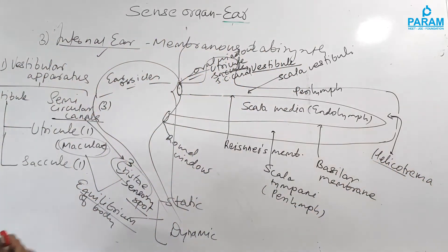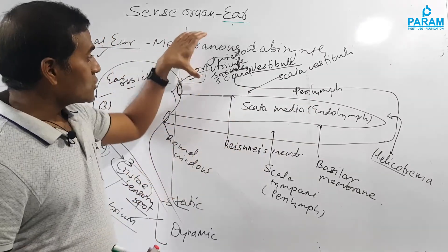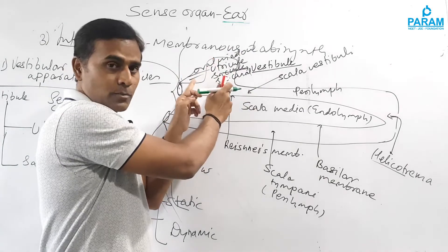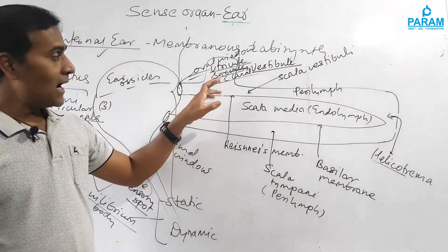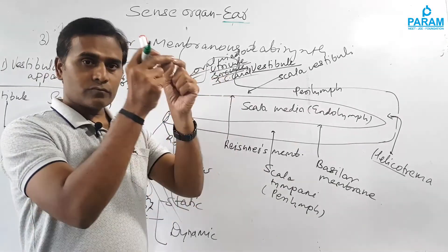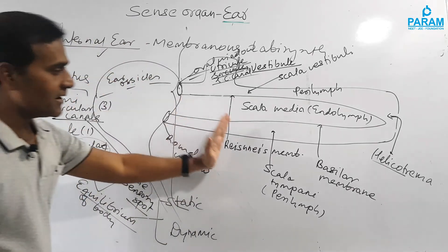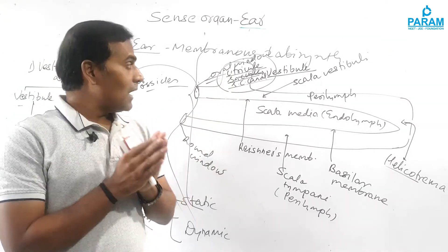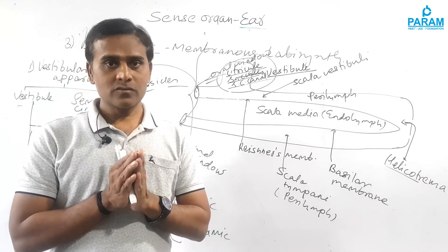This is about the structure of the internal ear. The vestibular apparatus is slightly above the level of the cochlea. In the next video, we will draw the structure of the vestibule, see how the macula and cristae look, and explain how the mechanism of hearing takes place. We hope that up to this point you have understood the structure of the external ear, middle ear, and internal ear.